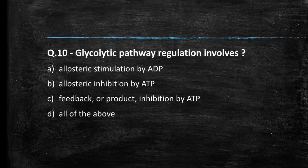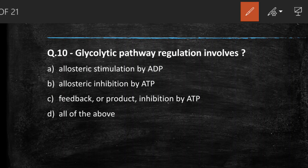Next question: glycolytic pathway regulation involves — (A) allosteric stimulation by ADP, (B) allosteric inhibition by ATP, (C) feedback/product inhibition by ATP, (D) all of the above. The right answer is option D, all of the above — glycolytic regulation involves allosteric stimulation by ADP, allosteric inhibition by ATP, and feedback/product inhibition by ATP.